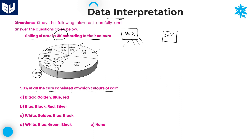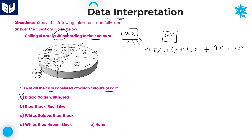Let us take the first option: black, gold, blue, and red. Black is 5%, golden is 6%, blue is 13%, red is 19%. Adding these: 13 + 6 = 19, 19 + 19 = 38, 38 + 5 = 43%. We are not getting 50%, so we can eliminate option A.